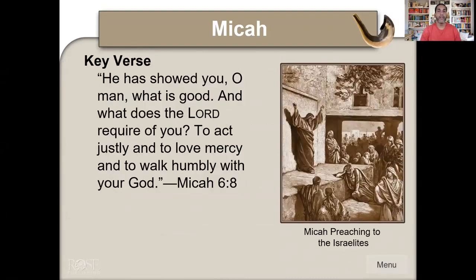Micah's key verse: 'He has shown you, O man, what is good and what does the Lord require of you.' Some people say they don't know what God requires — here it can't get any clearer. 'To act justly and to love mercy and to walk humbly with your God.' That is the first six books of the Minor Prophets. Read them to see their prophecies and doctrinal teachings — even though written long ago, it's still God's Word and still speaks to us even today.